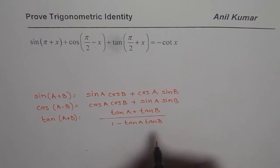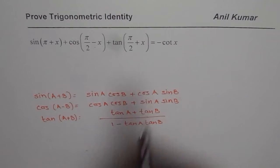So that will give you, when you expand and simplify, will give you minus cotangent of x and that is how you can prove left side equals to right side.